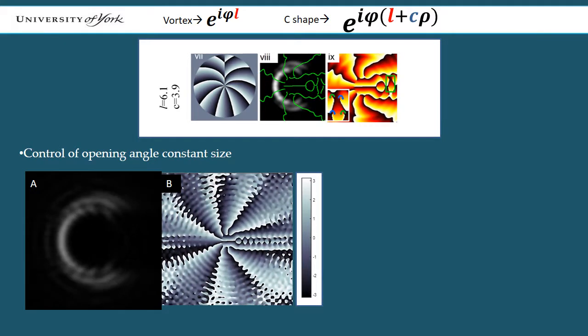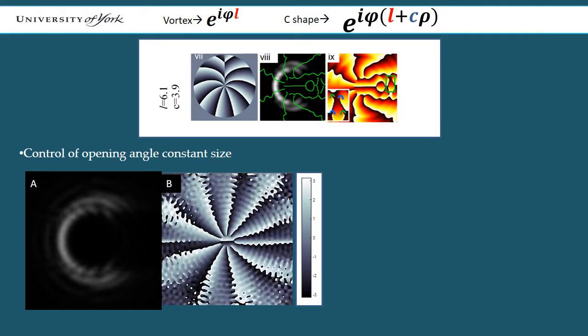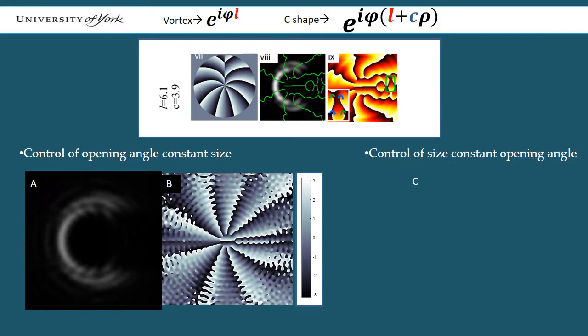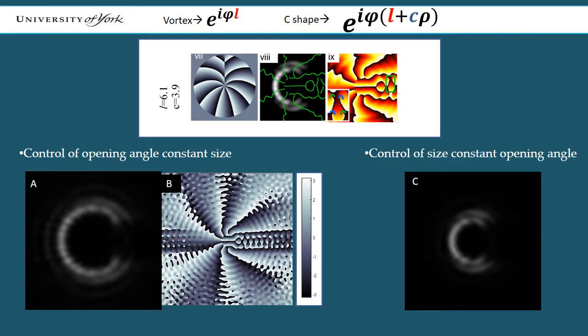In addition to the angle of the C-shape, the overall modulus of L and C coefficients can independently control the size of the intensity C-shape, as shown in animation C, for a varying size but constant opening angle.